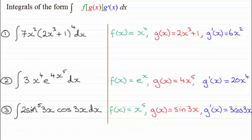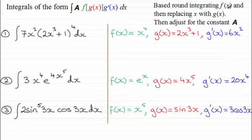So how do we handle integrals that essentially have this form? But the constant has changed. We introduce a constant here. Well it's no different really from what we were doing before. Remember it was based around integrating f of x and then replacing x with g of x. But we've got this next step here where we've got to adjust for the constant A. So I'll take you slowly through each of these examples.